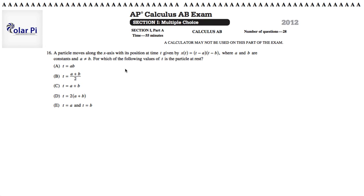Hi, welcome. In this video, I'm going to go through problem 16. In problem 16, it says a particle moves along the x-axis with its position at time t given by x of t equals t minus a times t minus b, where a and b are constants and a is not equal to b. This is important.